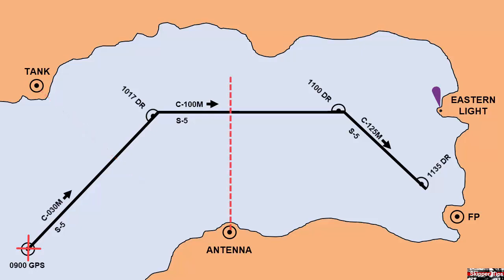Now once we turn on to our second leg, we can use the antenna off our beam to show our advance along the course, and we also have eastern light ahead, which we can use to show whether we are right or left of track.